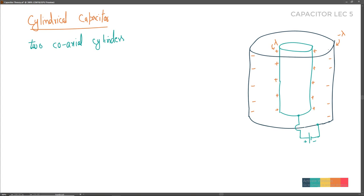Lambda is charge per unit length. If you take one unit length (one meter) of the inner or outer cylindrical shell, the total charge on that one-meter curved surface is what we call lambda. So total charge on the design equals lambda multiplied by the length L. This makes it very convenient to write total charge.